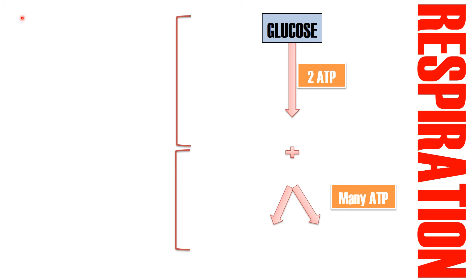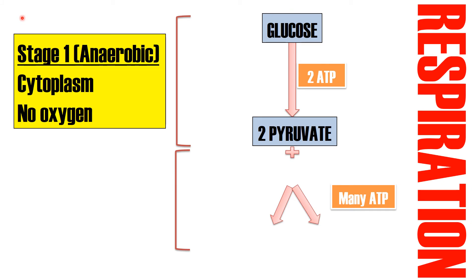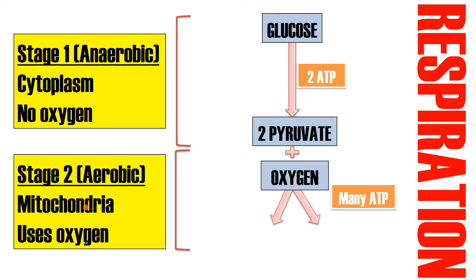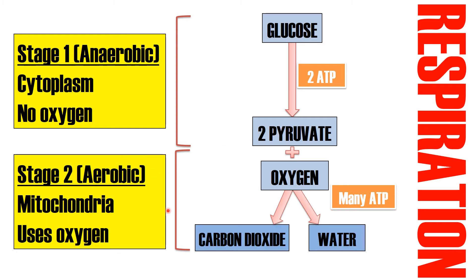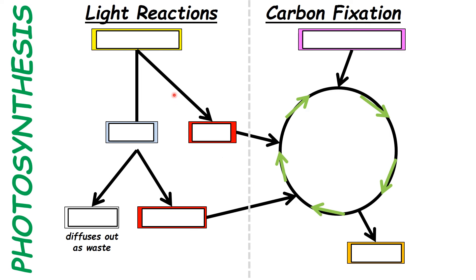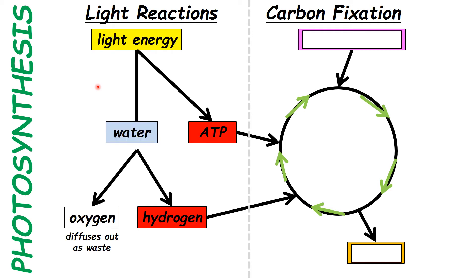Now a comparison of respiration and photosynthesis, as students often confuse them. Respiration starts with glucose, broken down into 2 pyruvate in the cytoplasm (anaerobic, Stage 1), sometimes leading to fermentation. Stage 2 is aerobic — pyruvate moves into the mitochondria, producing carbon dioxide, water, and many ATP. Photosynthesis, by contrast, uses light energy and produces glucose; carbon dioxide and water are used in photosynthesis but produced in respiration.